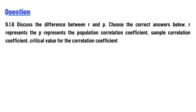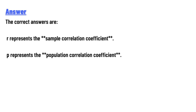Choose the correct answers. R represents the sample correlation coefficient. P represents the population correlation coefficient. The other options include critical value of the correlation coefficient. The correct answer is: R represents the sample correlation coefficient and P represents the population correlation coefficient.